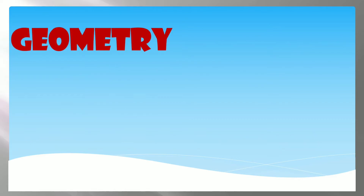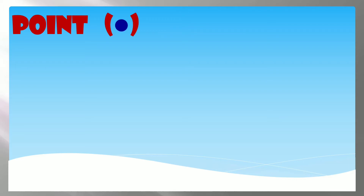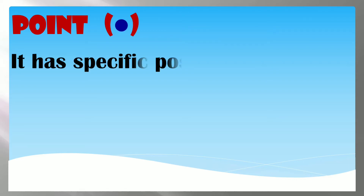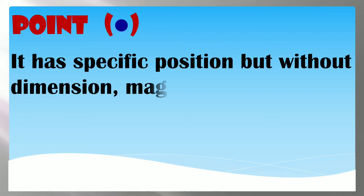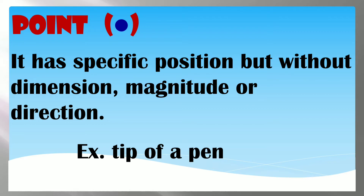Geometry deals with logical reasoning to prove certain statements. Now let us go through the undefined terms in geometry one by one. First is point. A point has a specific position but without dimension, magnitude, or direction. An example of a point is the tip of a pen.